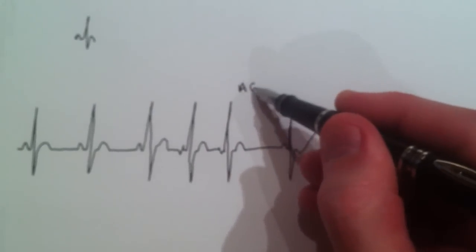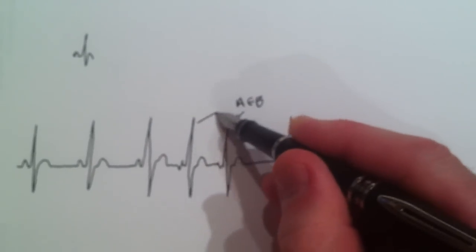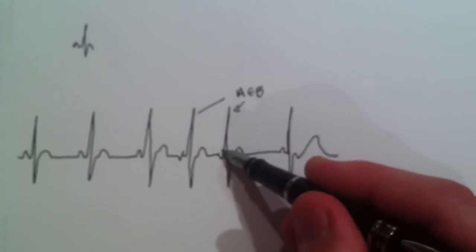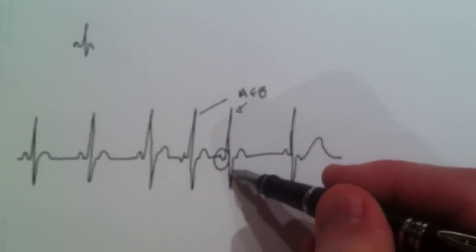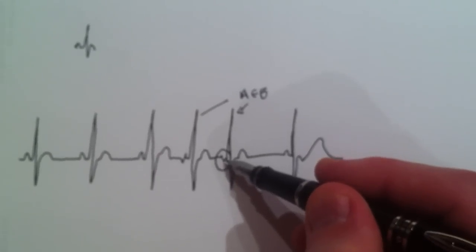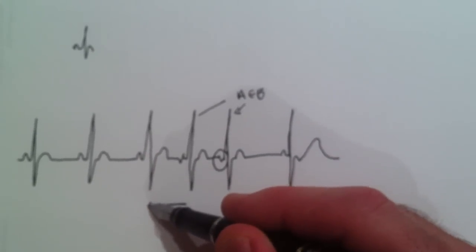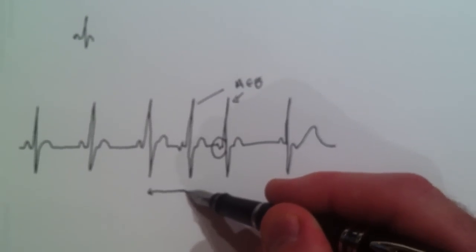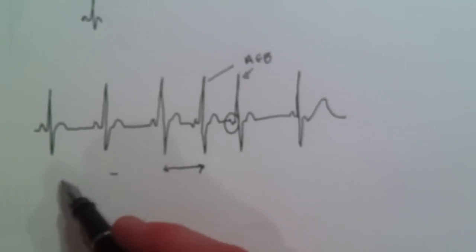These are called atrial ectopic beats. This one, this one. Recognizable by the fact that the P wave, the bit before the big beat, is a slightly different shape. And the interval between the last normal beat and the extra beat is slightly shorter than the normal interval.